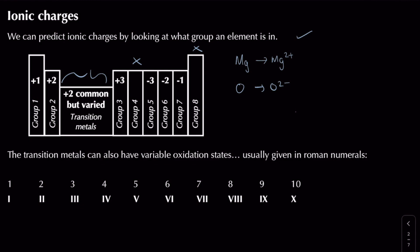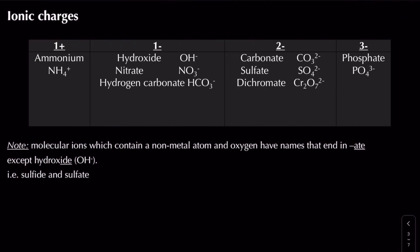For example, copper can exist as a 1+ ion or a 2+ ion - it has variable oxidation states. We represent that oxidation state with a Roman numeral in brackets. So copper 1+ is written as copper(I), and copper 2+ is written as copper(II). Normally most transition metals exist in a +2 oxidation state. And that covers ionic charges for simple atomic ions and transition metal ions.